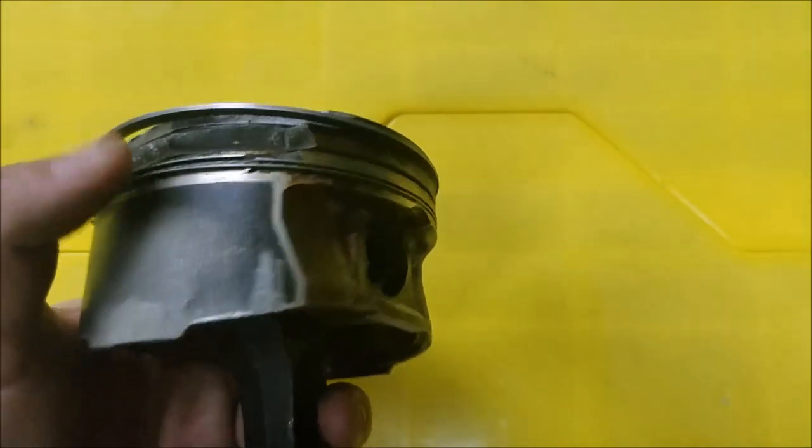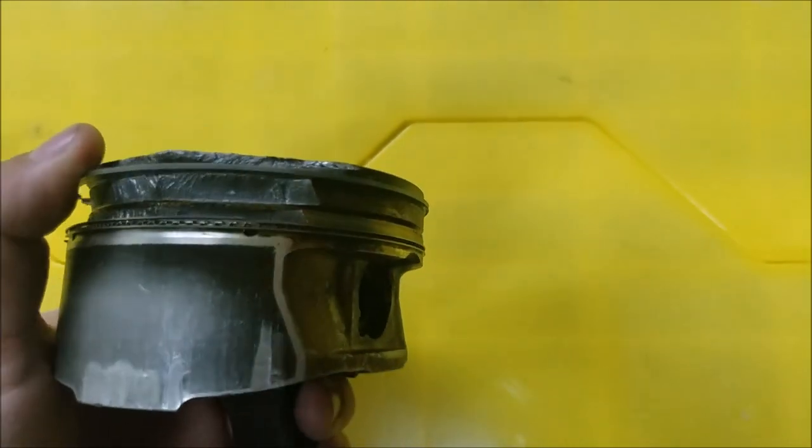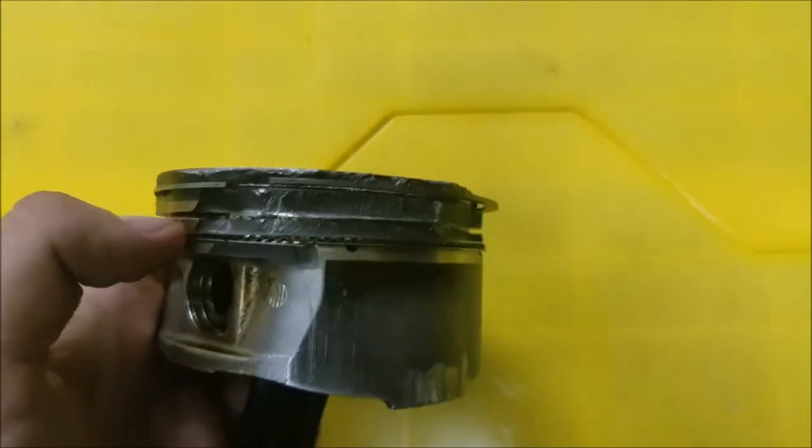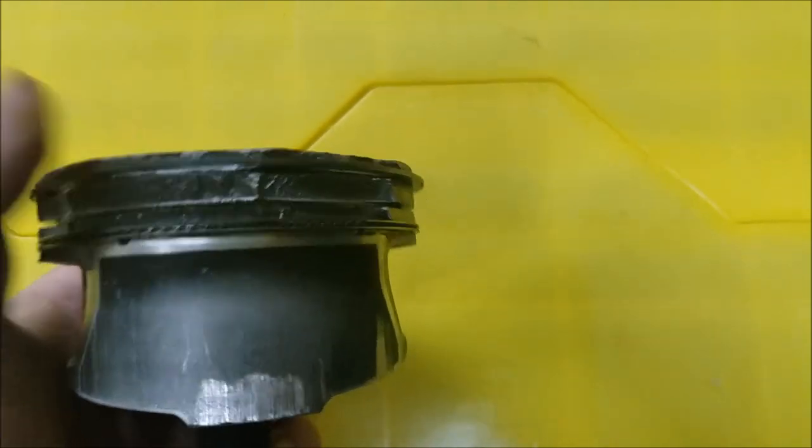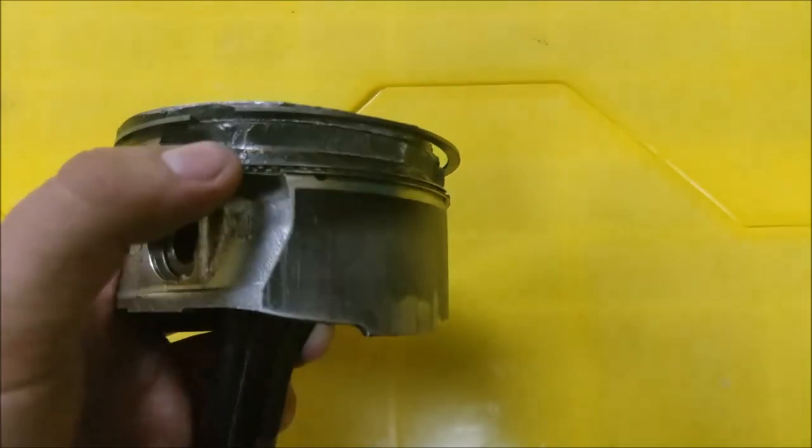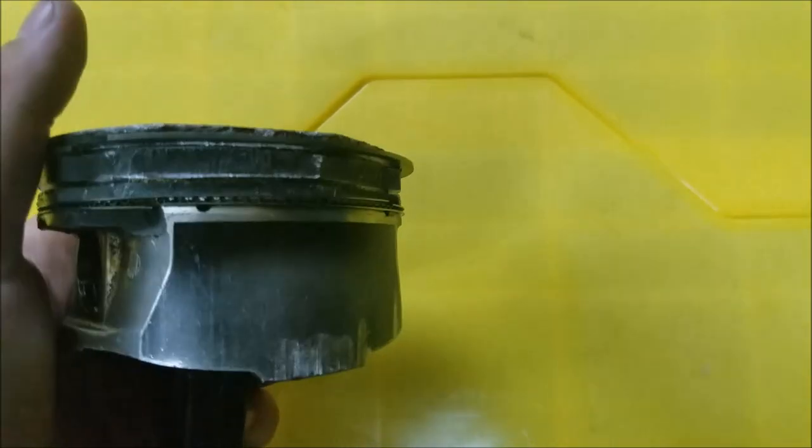These little metal rings here, they're piston rings. There's two of them. This one here and another one that should go here are to seal the piston to keep the gases from getting out. And this in here is the oil ring and it keeps the oil from getting into the chamber.